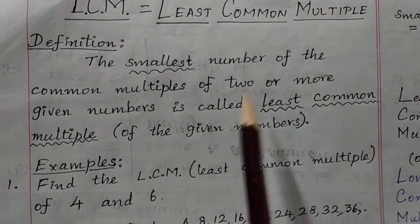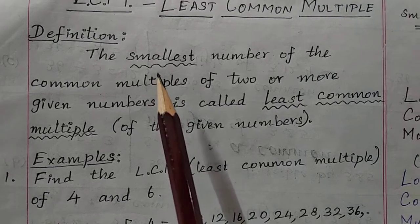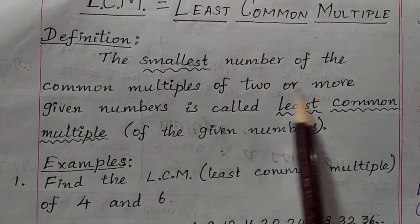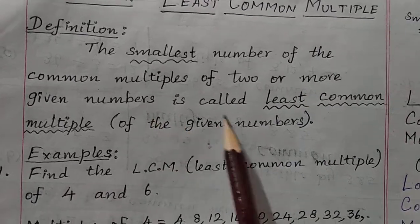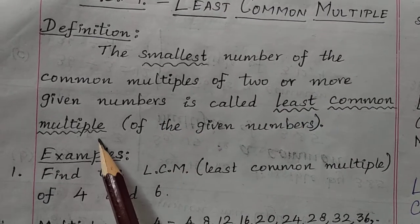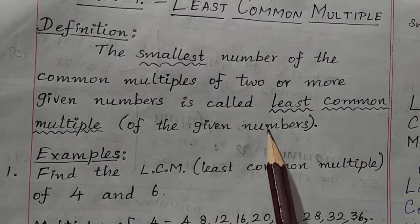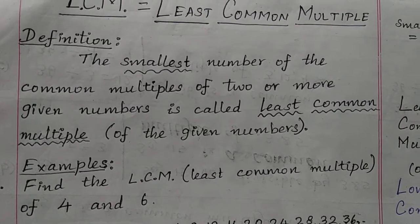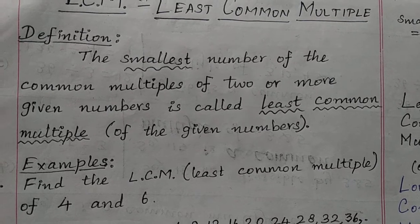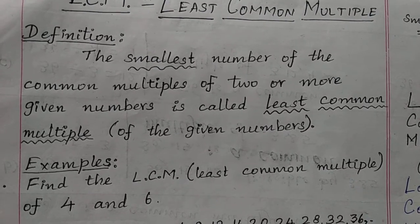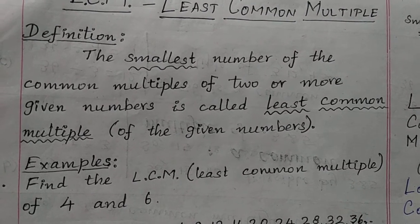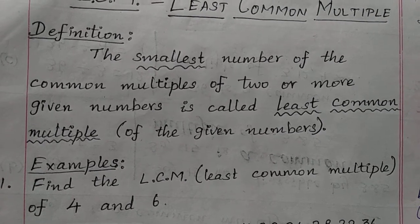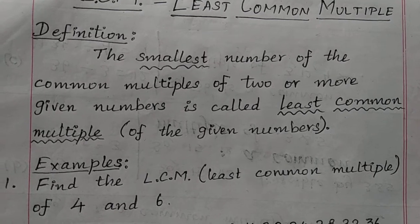The smallest number of the common multiples of 2 or more given numbers is called least common multiple of the given numbers. After finding out the common multiples of 2 or more given numbers, we can easily find the smallest common multiple. That number is called least common multiple.